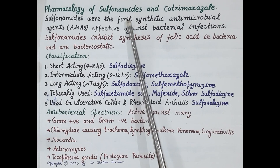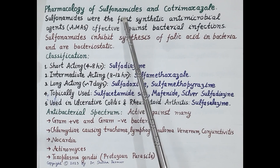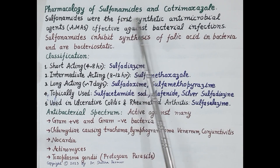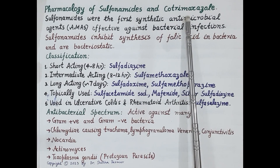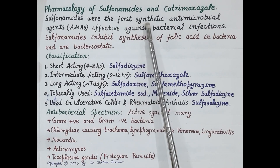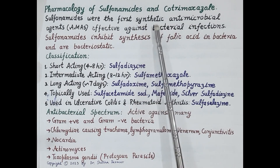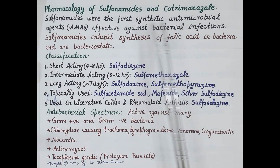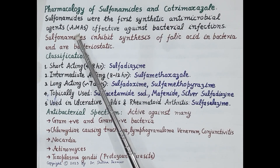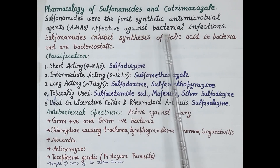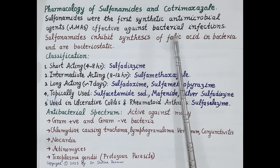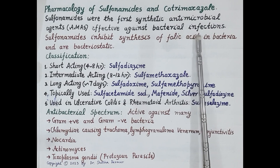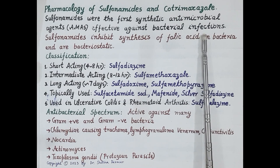Hello students, in today's video we are going to study pharmacology of sulfonamides and cotrimoxazole. Sulfonamides were the first synthetic antimicrobial agents that were effective against bacterial infections. Sulfonamides are used in the treatment of bacterial infections.